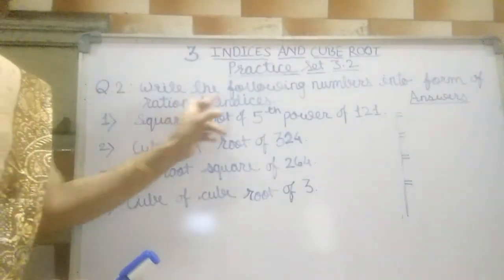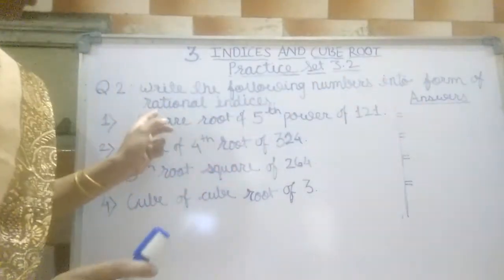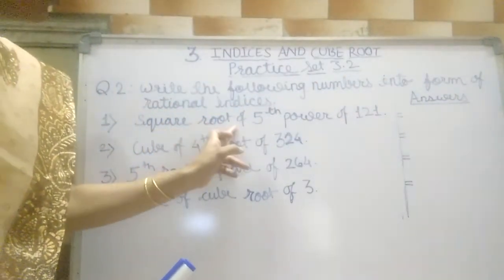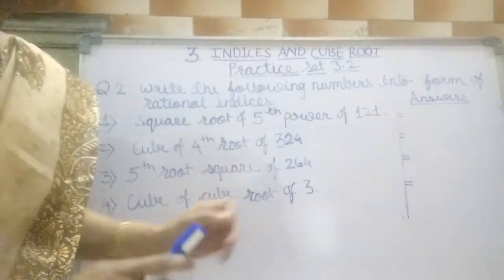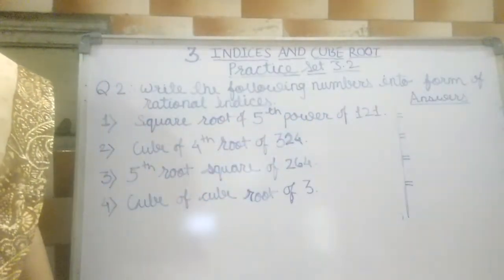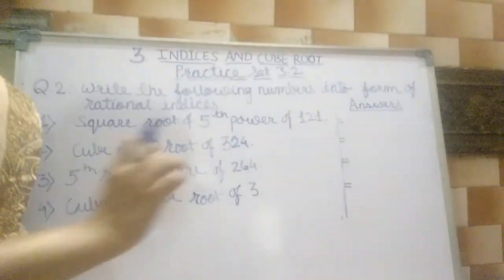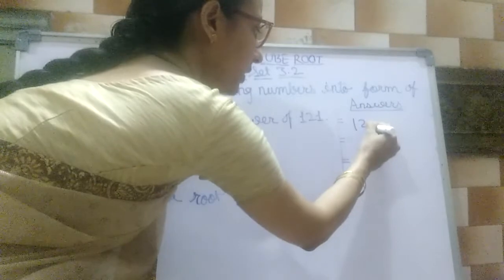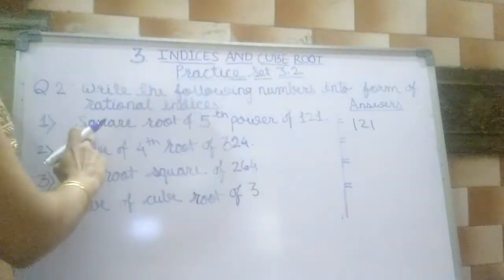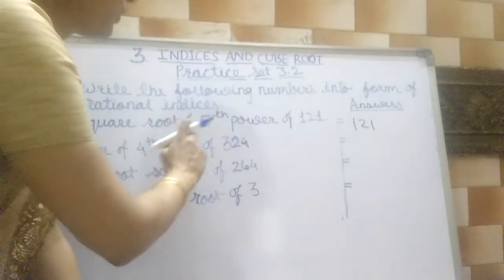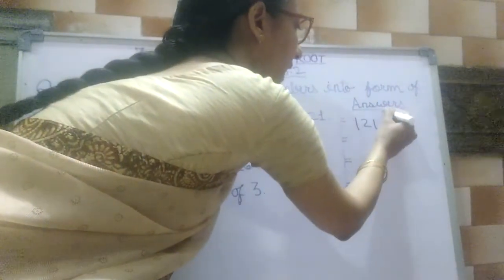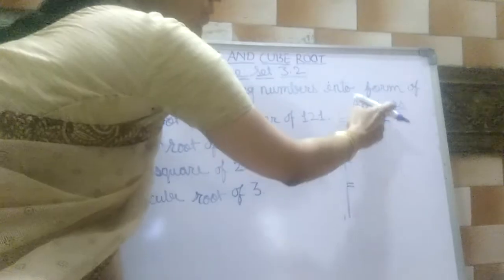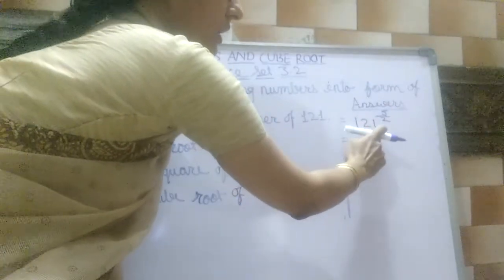Our question is write the following numbers into form of rational indices. First is square root of 5th power of 121. For that purpose we should write it as 121 as the base. Square root of 5th power: power is 5 and root is 2, so our index is 5 by 2. Base is 121, index is 5 by 2.